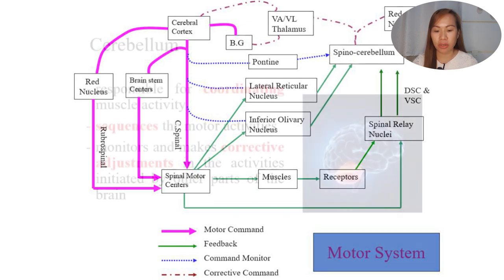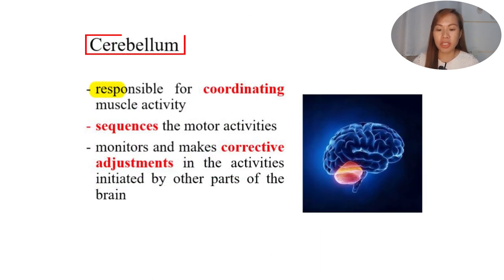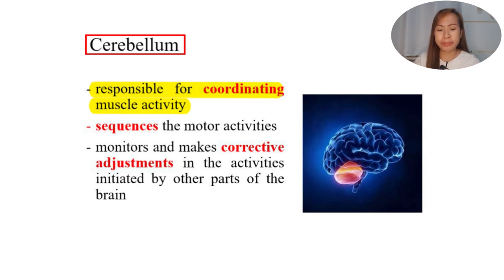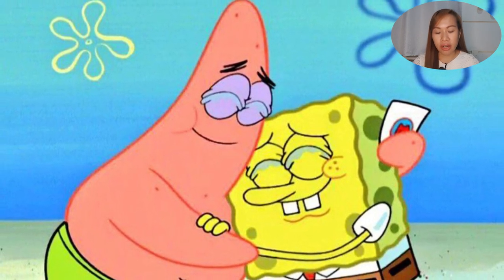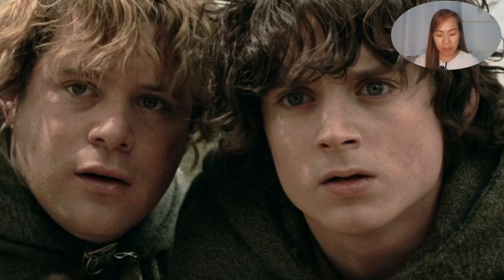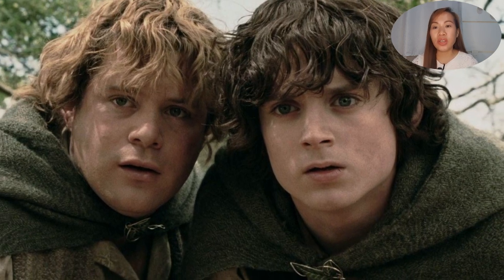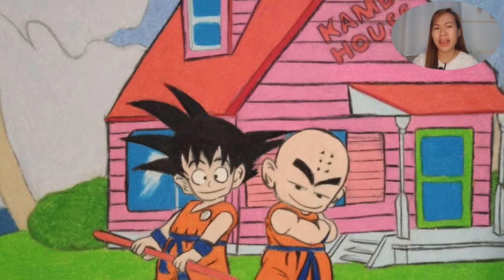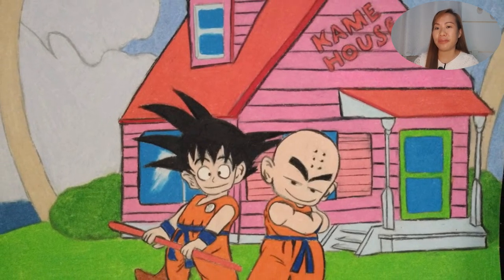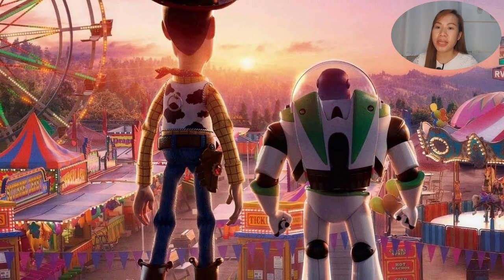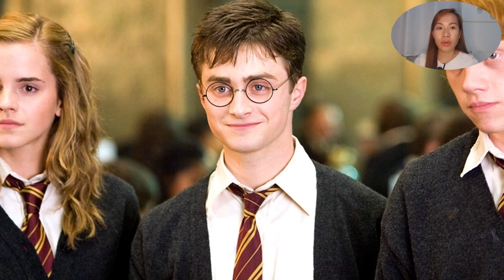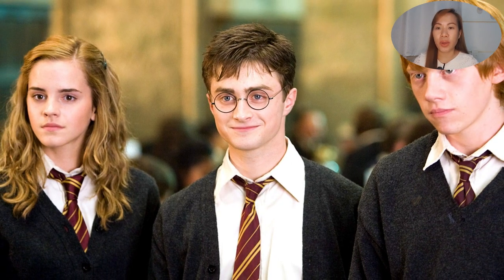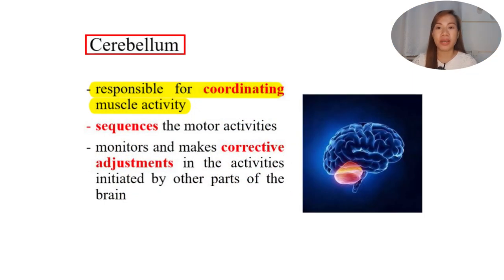The cerebellum is responsible for coordinating muscle activity. It is frequently described as a very good friend who corrects you if your actions are not correct — they do not humiliate or discourage you, but help you perfect what you want to do. The cerebellum is like the best friend of our motor command, wherein it corrects whatever is inaccurate in the movement or helps to perfect the movement. That is what the cerebellum does.